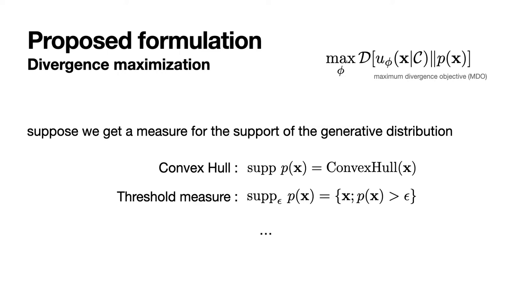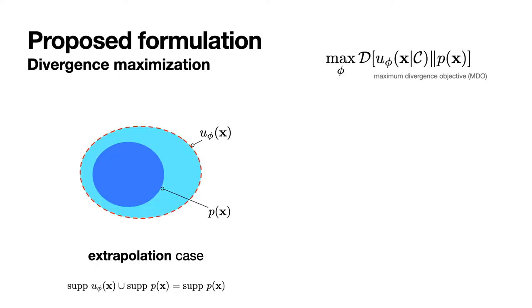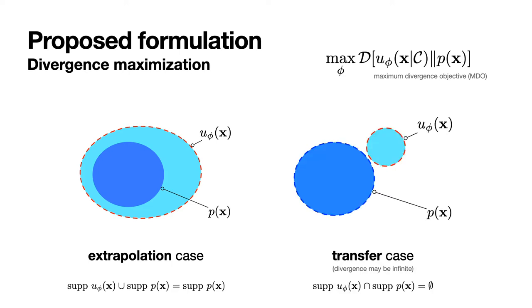Provided the measure of the distribution support, we can distinguish two extreme cases: the extrapolation case, where the original distribution is a subset of the divergent distribution, and the transfer case, where the intersection between original and divergent distribution is null. Hence, provided the calculability of such support, we can monitor the training to follow one of the two setups.